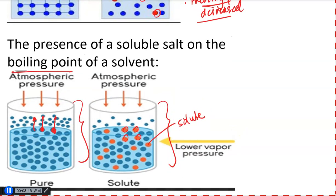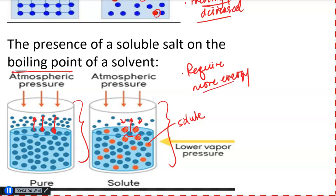For example, this water molecule that I'm underlining — if it wants to escape the liquid phase and go to the gas phase, it has to push past these two solute particles that are in its way. Every single water molecule in the system will face that same struggle, having to navigate around solute particles introduced into the solvent. Because of that, each water molecule requires more energy, meaning you must increase the temperature further for water molecules to get the additional energy they need. That translates into the boiling point of the solution actually being increased as compared to the boiling point of the original solvent.